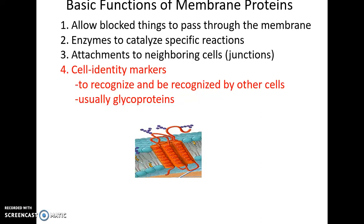Membrane proteins can also be cell identity markers. The carbohydrates of glycoproteins and glycolipids can be recognized by our immune cells so that we don't mount an immune response against our own cells.